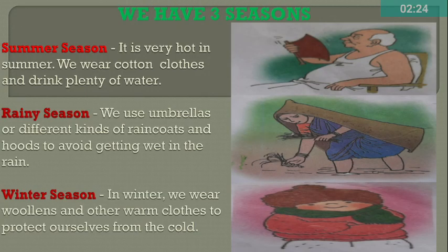We have three seasons. Summer season — it is very hot in summer; we wear cotton clothes and drink plenty of water. Rainy season — we use umbrellas or different kinds of rain coats and hoods to avoid getting wet in the rain. Winter season — in winter, we wear woolen and other warm clothes to protect ourselves from the cold.